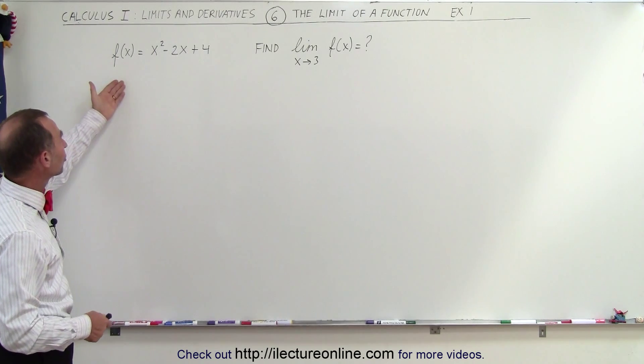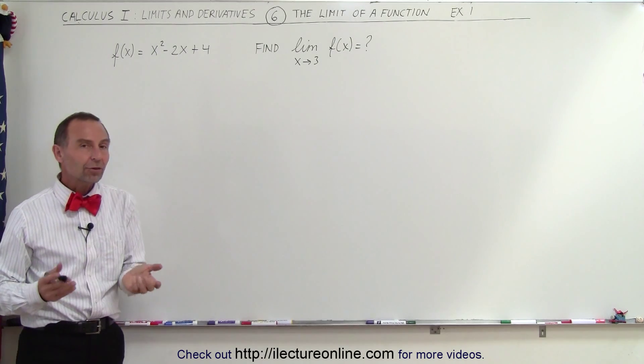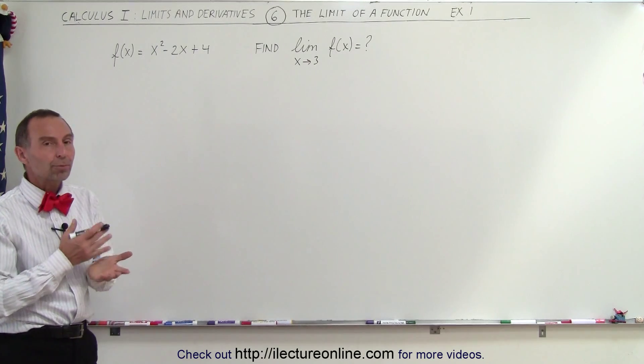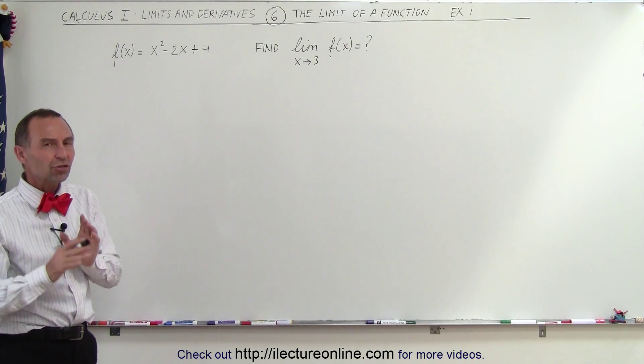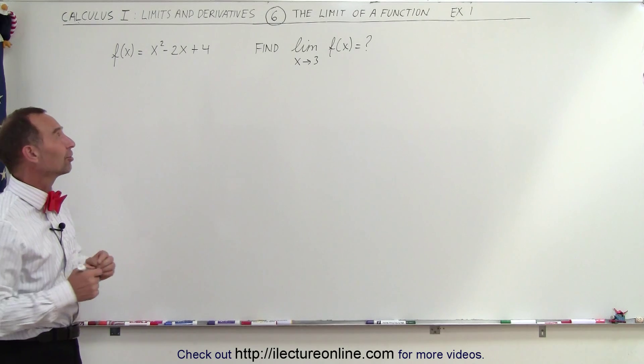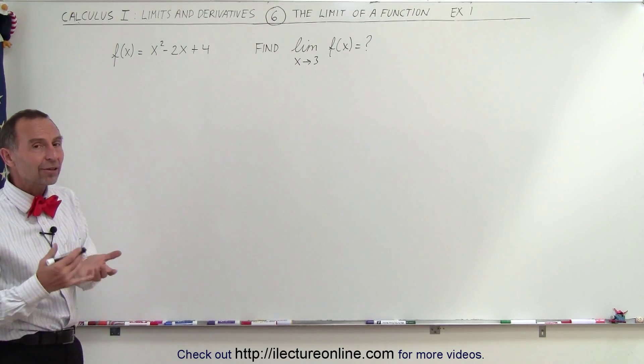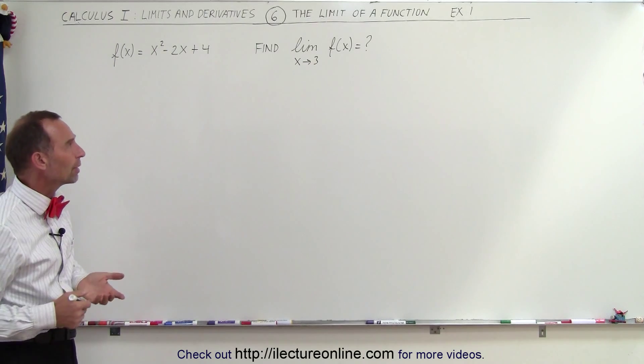So let's say we have a function, f(x) is equal to x² - 2x + 4, and they're asking you to find the limit as x approaches 3. Now that's kind of a strange concept for a simple polynomial function like this. So how do you do that? How do you find the limit as x approaches 3?